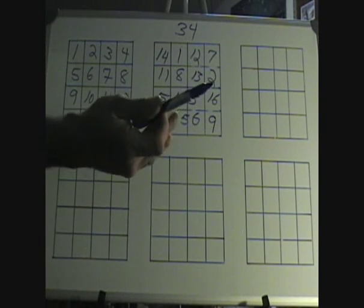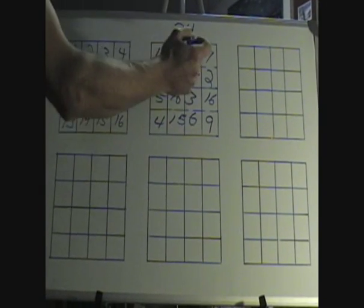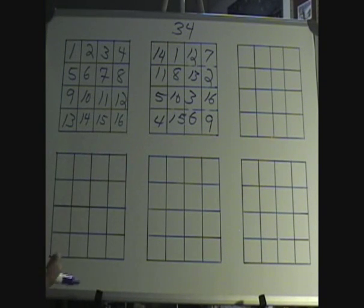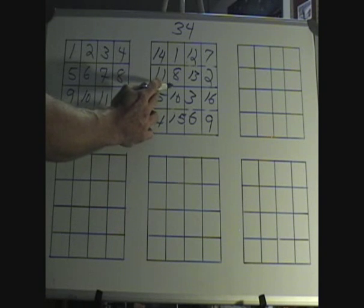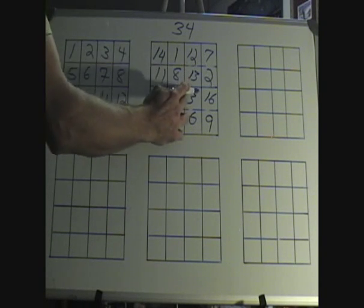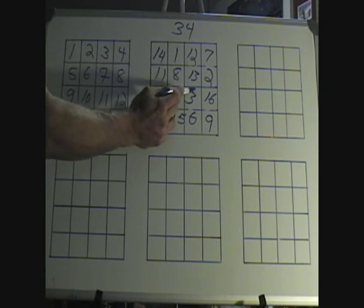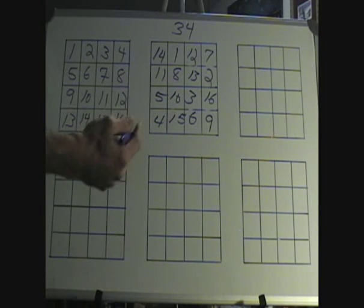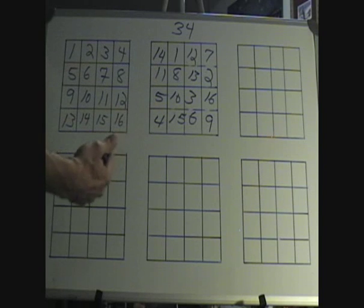If you want to take it to the next level, you can do the four outside corners. 14, 7, 9, 4. That's 34. You could do the four squares right in the center. 10 plus 8 plus 13 plus 3. 34. No matter how you go about it, it's going to be 34 every time.